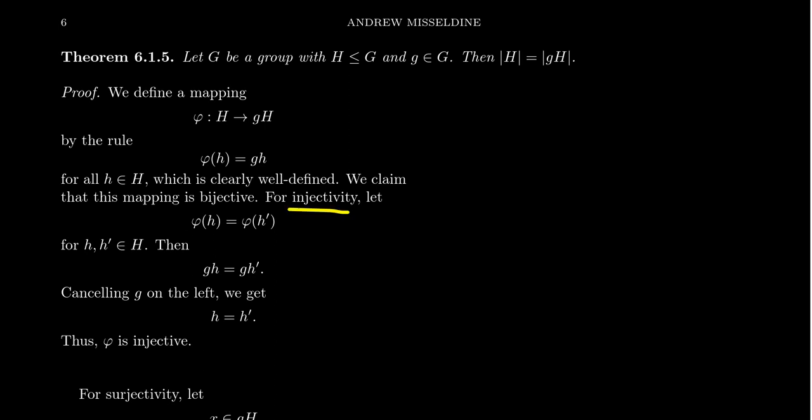We have to first show that φ is injective. Assume that φ(h) equals φ(h′) for two potentially different elements of H. Well, if φ(h) equals φ(h′), that means that gh equals gh′, because that's what the map does. But then, because we have a g on the left of both sides, we can cancel the g on the left by the cancellation law, and we see that h equals h′. So the map is, in fact, injective.